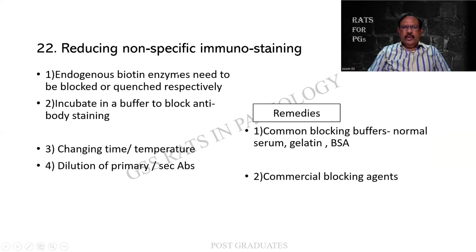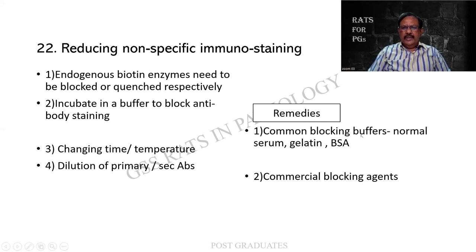How do you reduce the non-specific immunostaining? One, by using endogenous biotin enzymes that need to be blocked or quenched respectively. Incubate it in a buffer to block the antibody staining. Changing the time and the temperature. Dilution of the primary and the secondary antibodies - this dilution principle is used in any immunological study, take the Widal for example. The remedies include common blocking buffers: normal serum, gelatin, and BSA, as well as commercial blocking agents. These can be used for non-specific immunostaining.